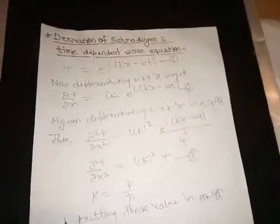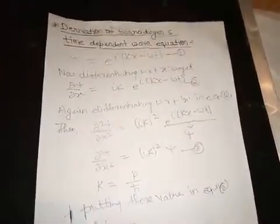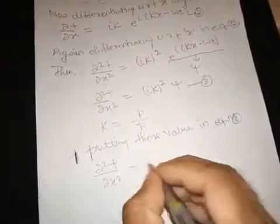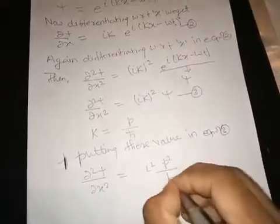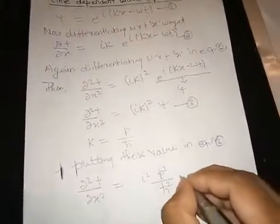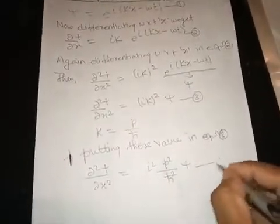∂²ψ/∂x² equals i² p² ψ / ℏ². Let this be equation number 4.